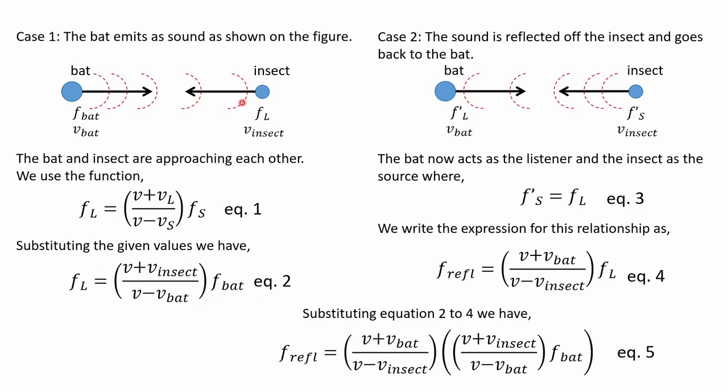This is the frequency heard by the insect. For case two, the sound is reflected off the insect and goes back to the bat, so the roles are now reversed. The insect will act like a source and the bat will become the listener. f_s prime, which is the frequency produced by the insect, is basically the frequency heard by the insect in case one.